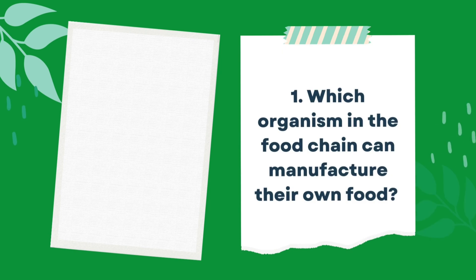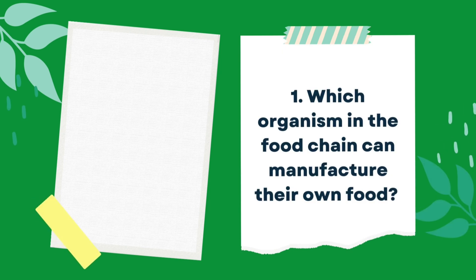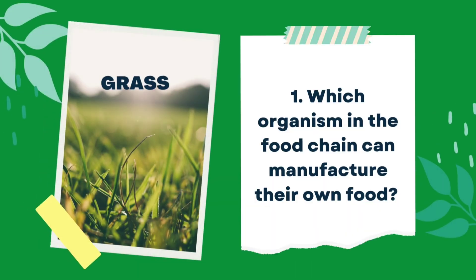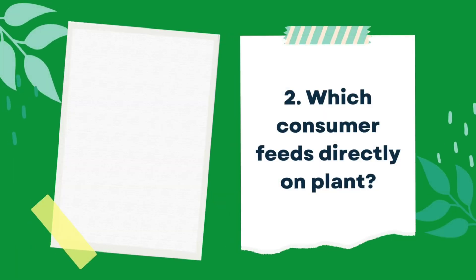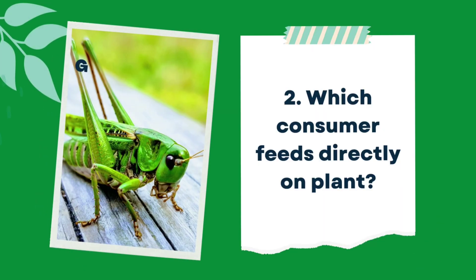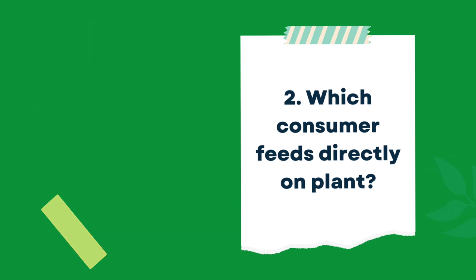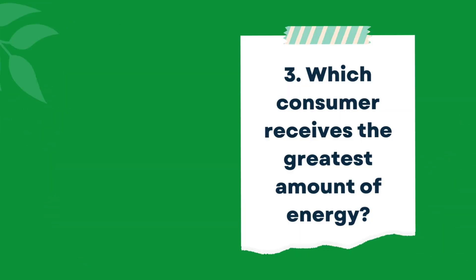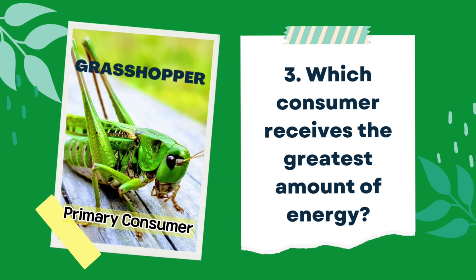For our guide questions — question number one: which organism in the food chain can manufacture their own food? The answer is yes, plants. Question two: which consumer feeds directly on plants? The answer is grasshopper. Number three: which consumer receives the greatest amount of energy? The answer is the primary consumer, or the grasshopper.